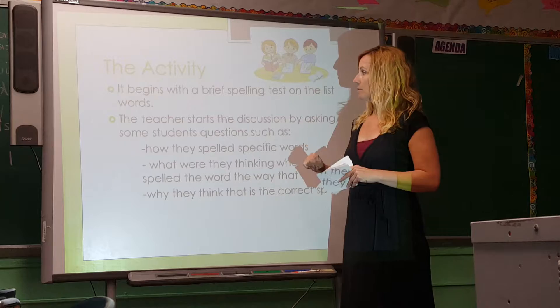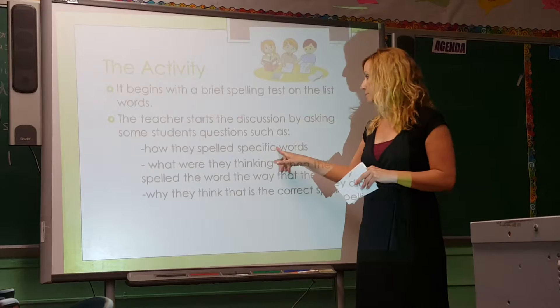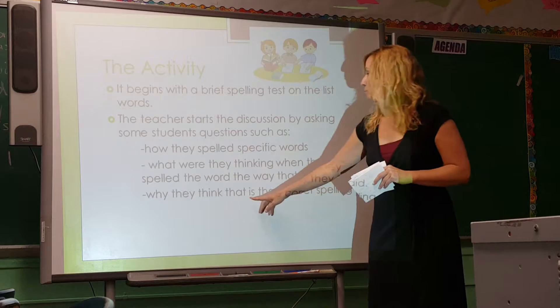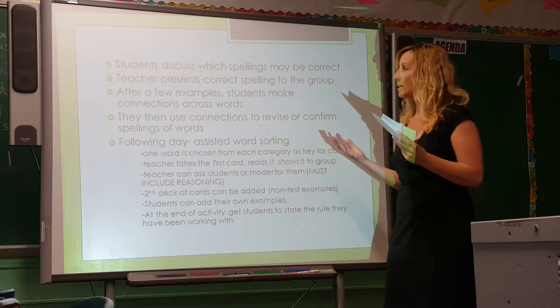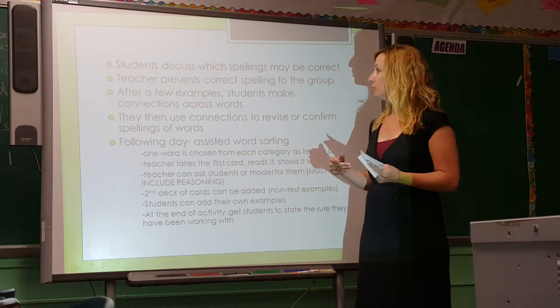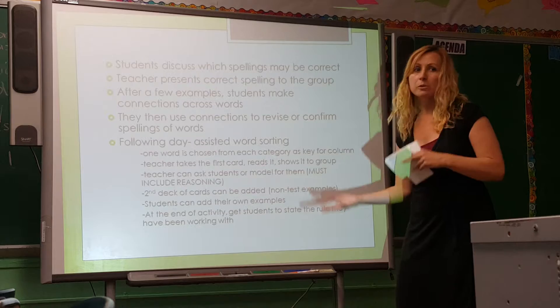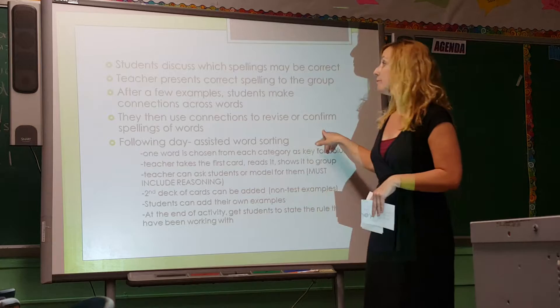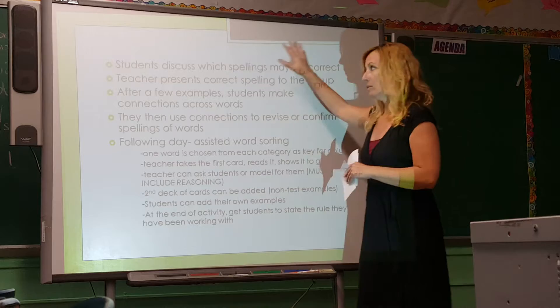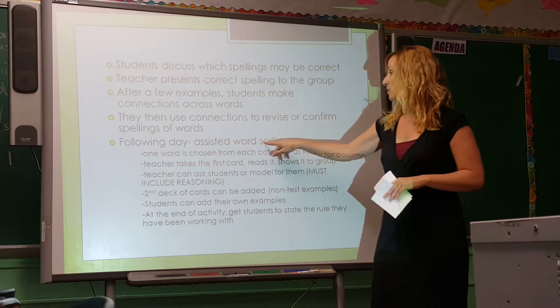The activity begins with a read spelling test on the list of words. The teacher starts the discussion by asking students questions such as how they spell specific words, what they were thinking when they spelled the word the way that they did, and why they think that is a correct spelling. Students then discuss which spellings may be correct, and the teacher presents correct spellings to the group. After a few examples, students start to make connections across words — why is one word spelled a specific way, why is another word spelled differently? They use those connections to revise or confirm their spellings. This is probably one to two lessons; the following day would be an assisted word sort.